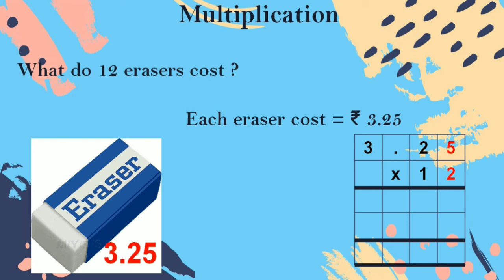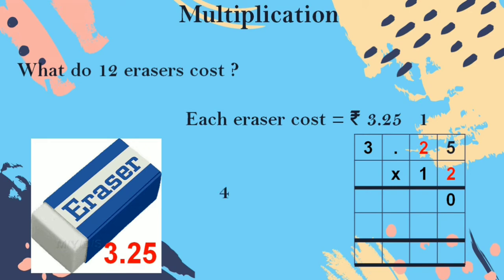2 fives are 10. You put 0 down, 1 up. The next number: 2. 2 twos are 4. You strike out that carry number and add with 4. 4 plus 1 is 5. The next number: 3. 2 threes are 6.